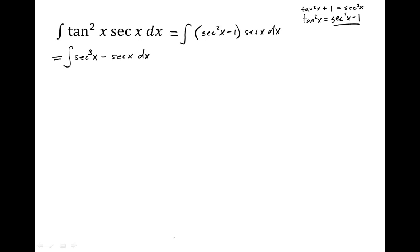And then we can take those and split them across the subtraction. So we have the integral of secant cubed x dx minus the integral of secant x dx.